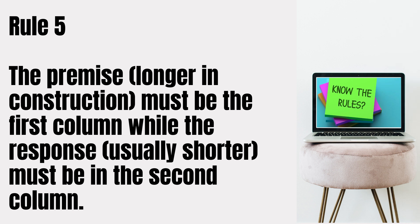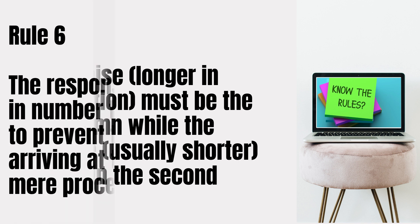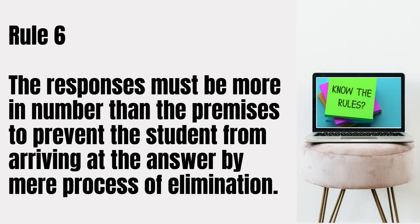Rule number five: the premise, which is longer in construction, must be in the first column, while the response, usually shorter, must be in the second column. Rule number six: the responses must be more in number than the premises to prevent the student from arriving at the answer by mere process of elimination. So, if you have ten premises, you should have eleven or more responses.